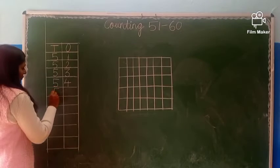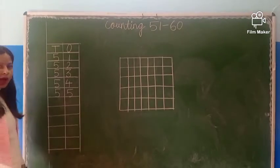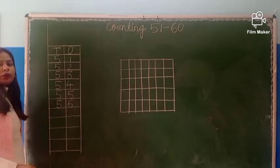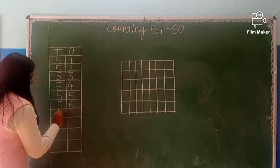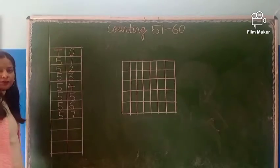After 54: 5, 5, 55. Then 5, 6, 56. Next is 5, 7, 57.